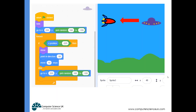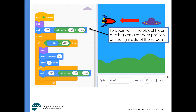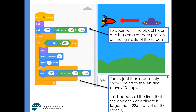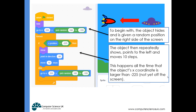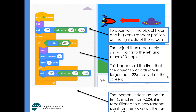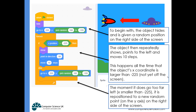Here's an example of that script. To begin with, the object hides and is given a random position on the right-hand side of the screen. The object repeatedly shows, points to the left, and moves 10 steps - this happens all the while the object's x coordinate is larger than minus 225, meaning it's not yet off the screen. The moment it goes too far to the left-hand side, so its x position is less than minus 225, it is repositioned to a new random point on the y axis on the right-hand side of the screen.